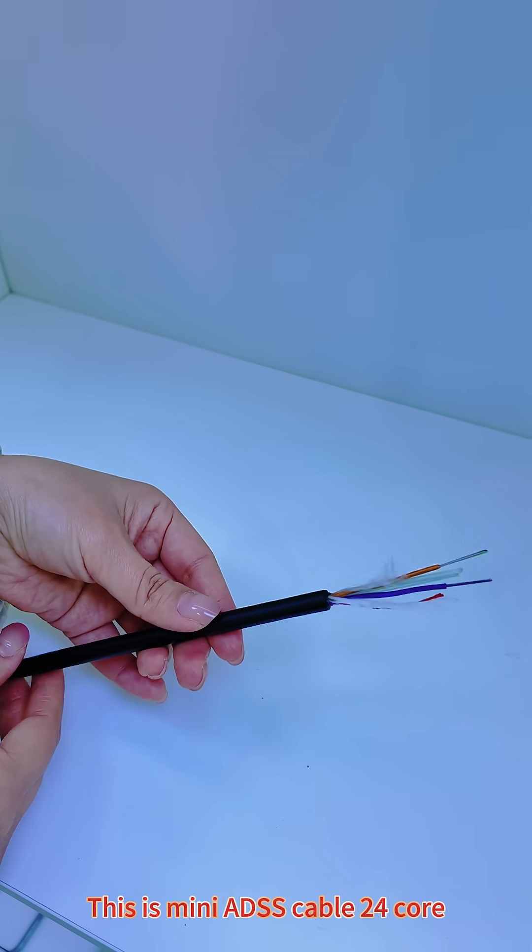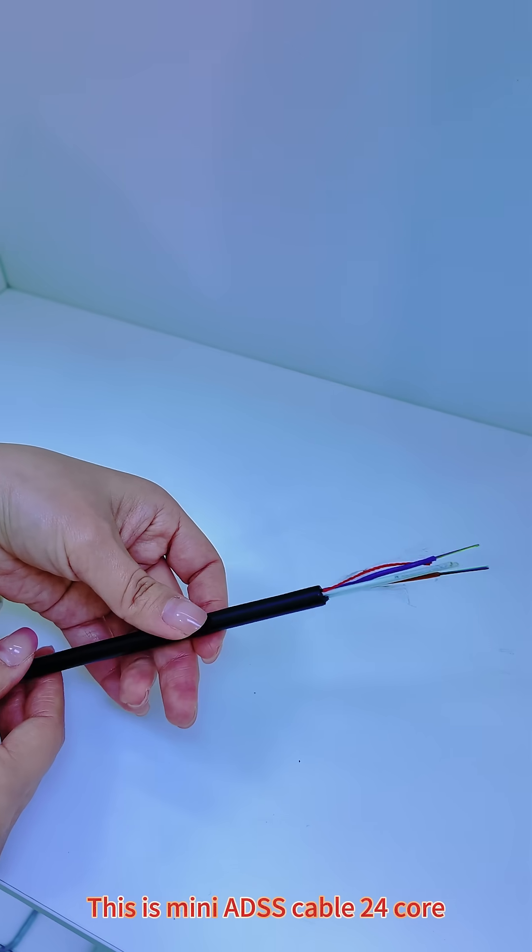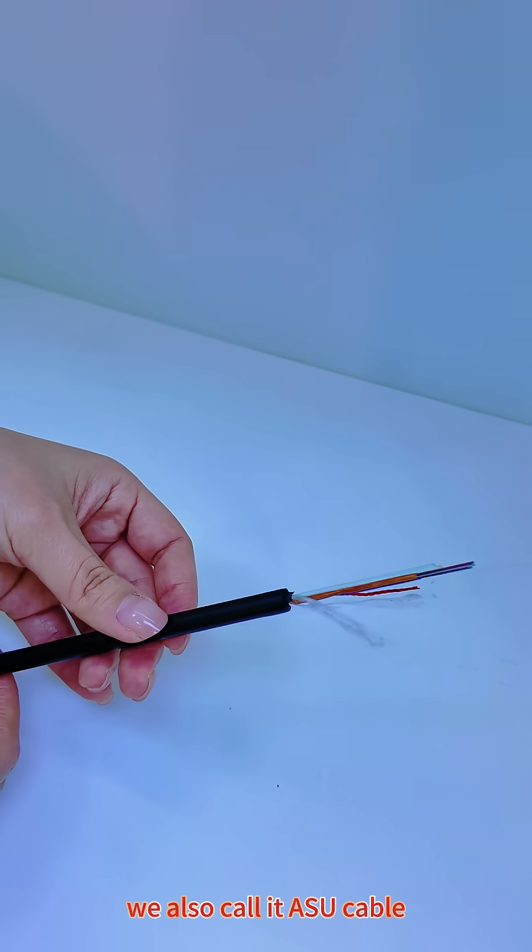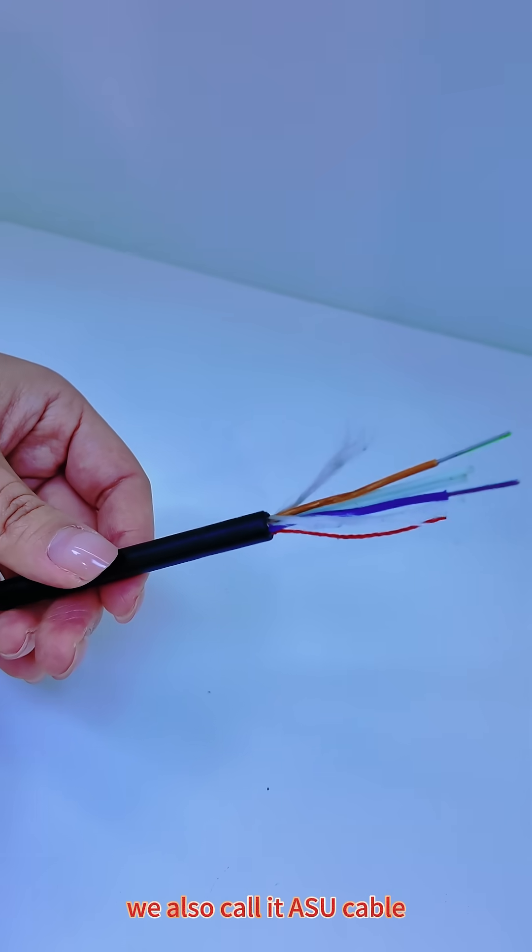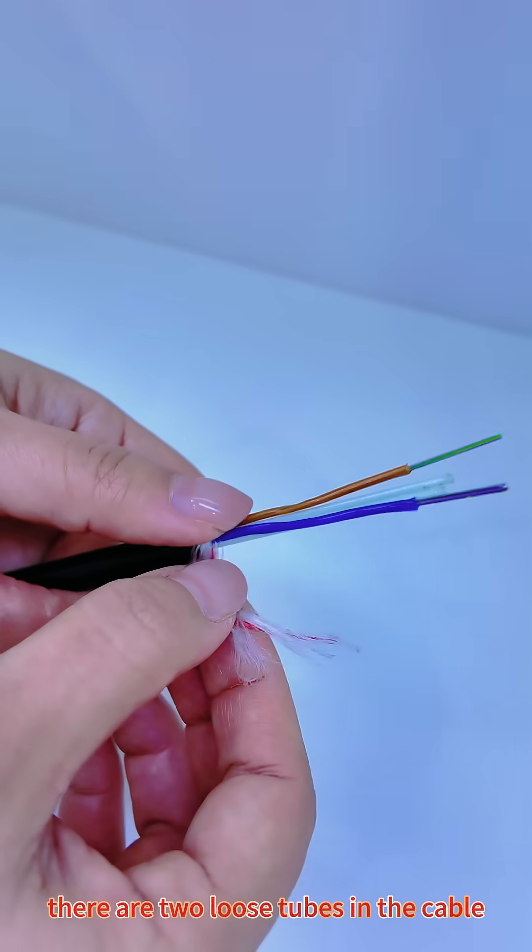This is a mini ADSS cable, 24 core. We also call it ASU cable. There are two loose tubes in the cable.